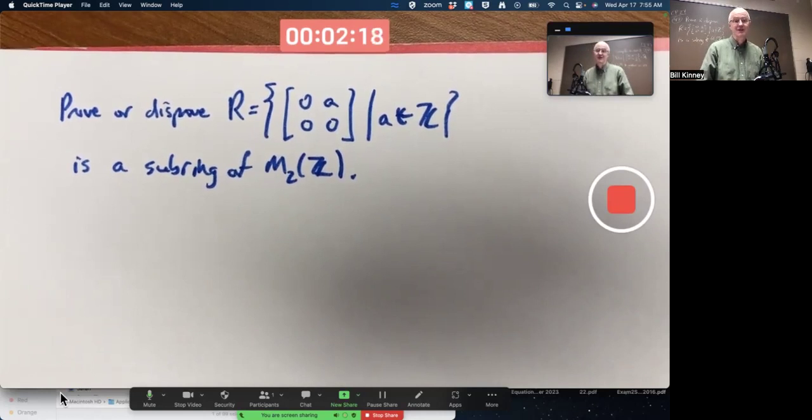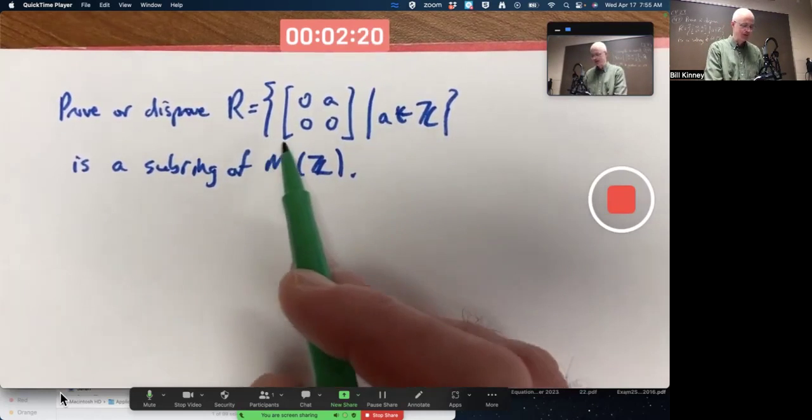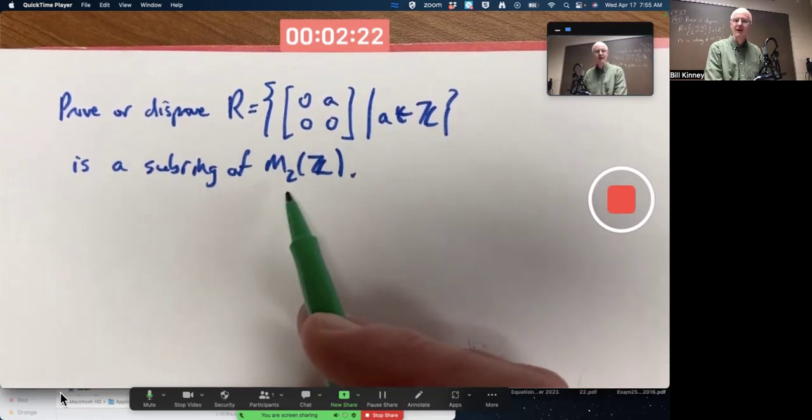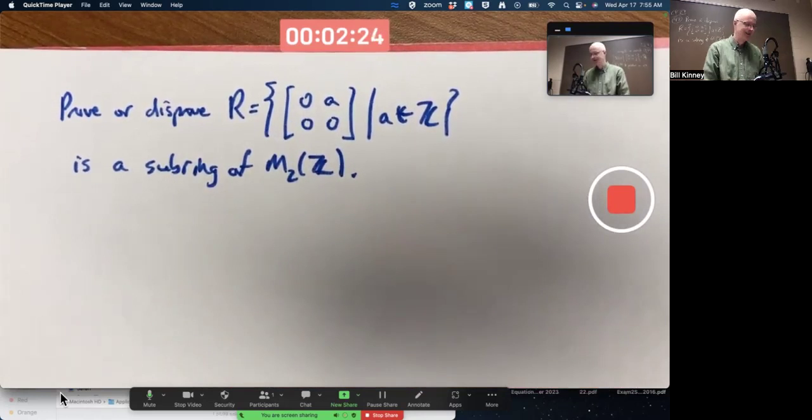Probably you need to do some scratch work first, a little experimentation. We want to prove or disprove that this set is a subring of this. You don't know the answer. You've got to kind of figure it out.